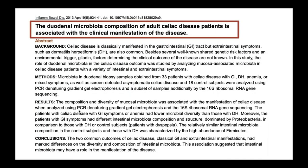A study titled 'Duodenal Microbiota Composition of Adult Celiac Disease Patients is Associated with the Clinical Manifestation of the Disease' discusses how dysbiosis in the upper small intestine actually influences the manifestation of this particular disease. This is very important to take into account in understanding how diet can influence health outcomes, and it's something we can fortunately assess through gut testing to better target how we treat patients and clients.